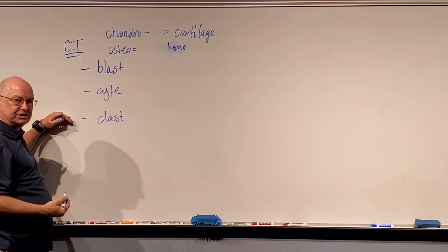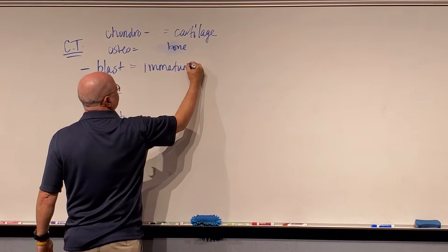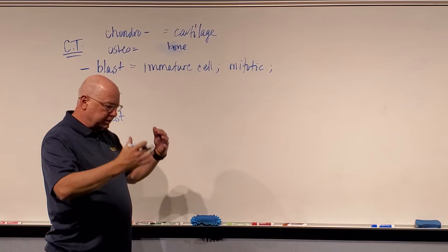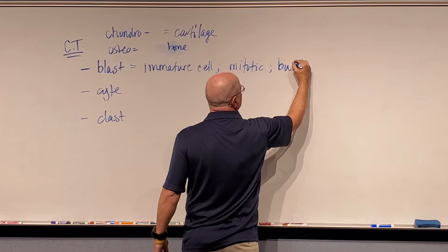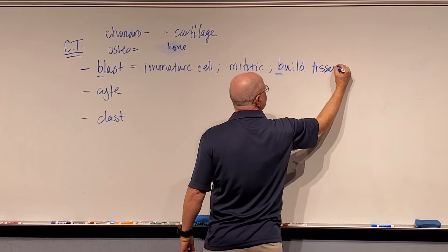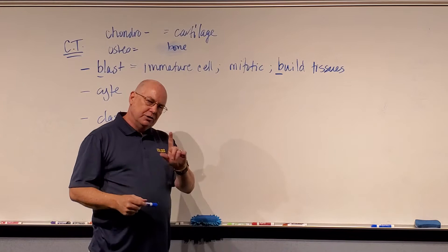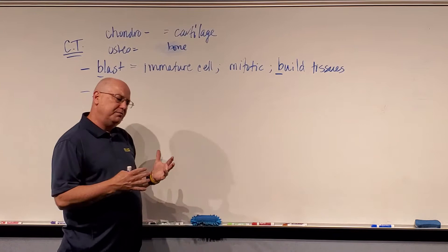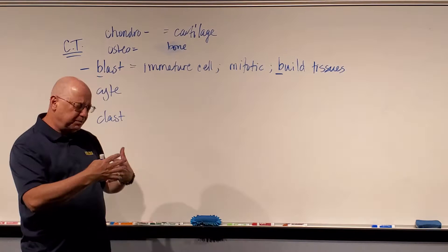A blast is considered to be an immature cell. They are mitotic, meaning they are capable of reproducing by dividing by mitosis. They can continually reproduce and start to grow the tissue. Think of the blast as the builders of tissues — they build the connective tissue in which they live. By immature, it means that a chondroblast might grow up to be a chondrocyte, or it might morph into an osteoblast and then an osteocyte. They're not 100% dedicated to a tissue.